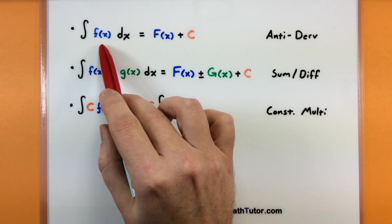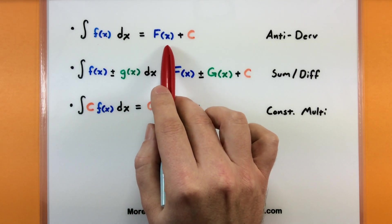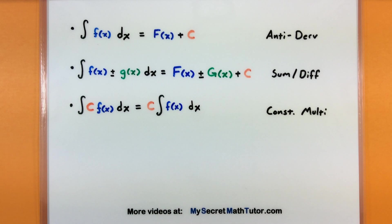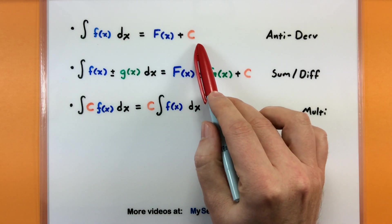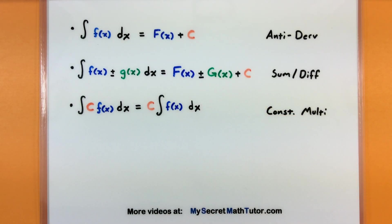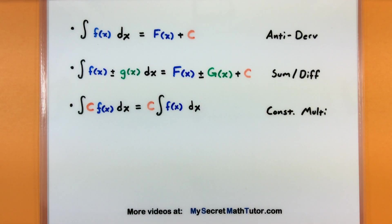What this is saying is that I'm starting with some function, working backwards, and its anti-derivative is what I'm calling capital F. These anti-derivatives will also involve a plus C, a constant, because when we're taking the anti-derivative there may be some constant component, but the derivative wipes that out so we're not sure what it is.